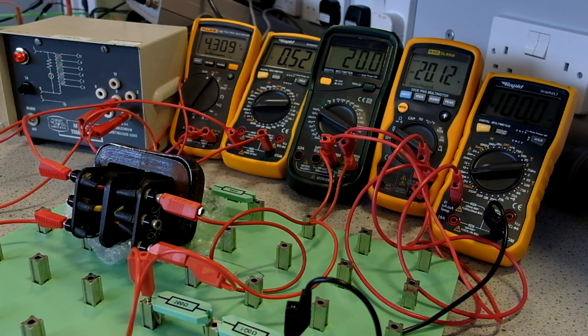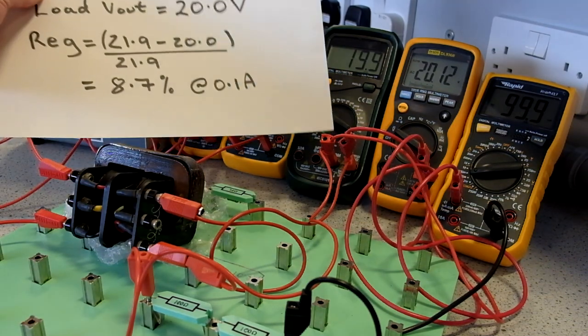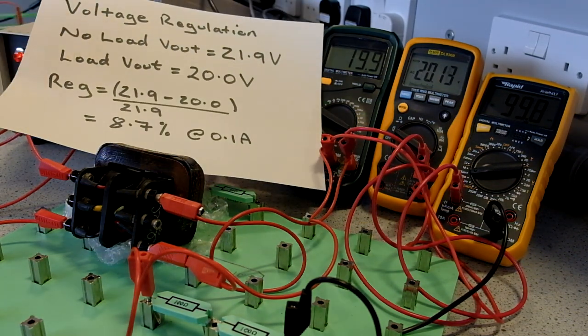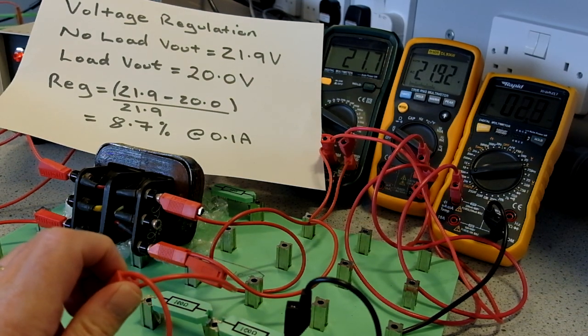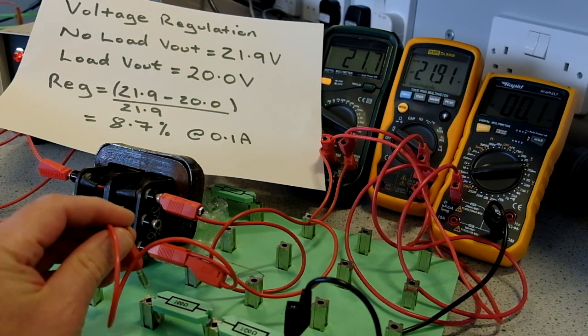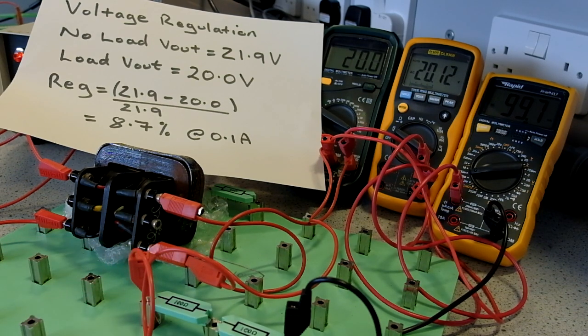In terms of voltage regulation at 100 milliamps: no load voltage 21.9, load voltage 20.0. That gives us a voltage regulation of a difference of 1.9 volts. That gives a voltage regulation of 8.7% at 0.1 amps.